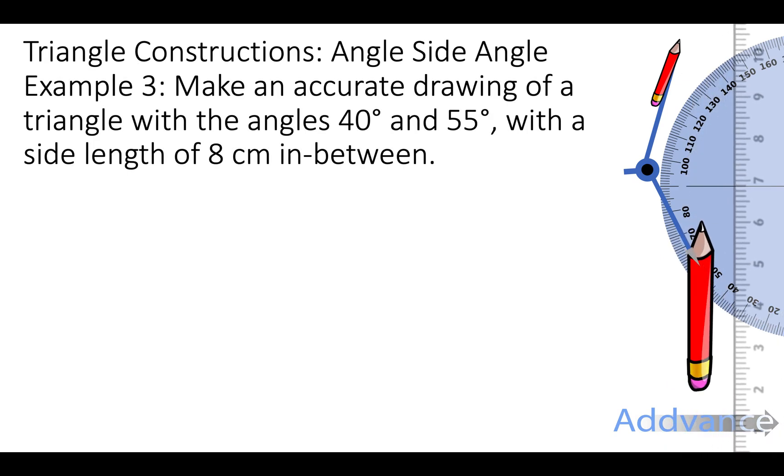Finally we can also do an angle side angle triangle where you're given two angles and a side. Example 3 says make an accurate drawing of a triangle with angles 40 degrees and 55 degrees with a side length of 8cm in between them.